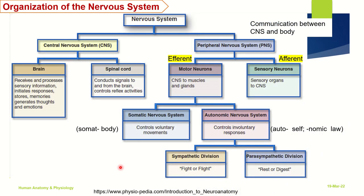If I had to organize the nervous system, it is divided into the CNS and the PNS. Communication that occurs between the CNS and the body happens because of the peripheral nervous system. The efferent and the afferent, or the motor and the sensory neurons, are the further classification responsible for